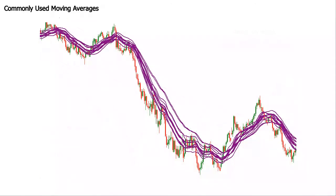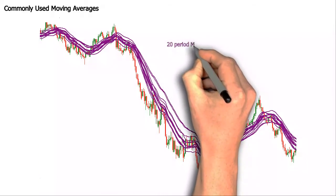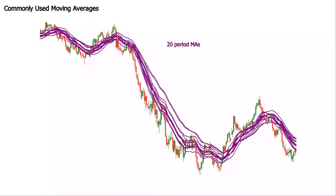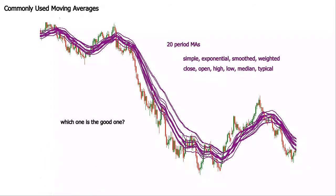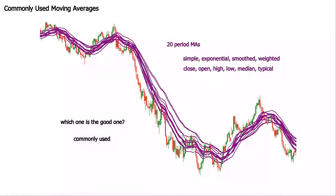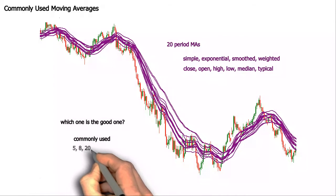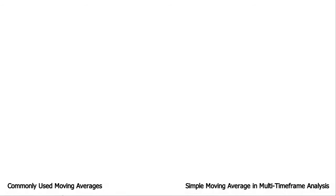There are multiple ways a moving average can be calculated, which makes it a versatile tool. On a chart, simple, exponential, smoothed, or weighted moving averages can be plotted, and they can be calculated based on different prices — close, open, high, low, medium, or typical. Commonly used short-term periods are 5, 8, 20, and 50.